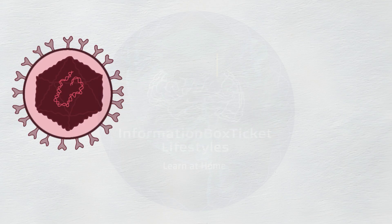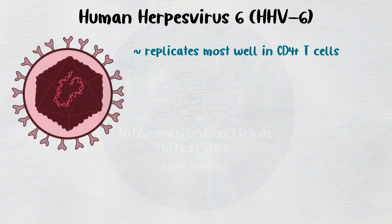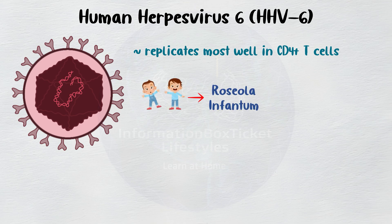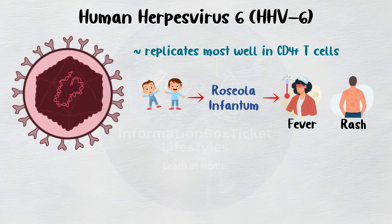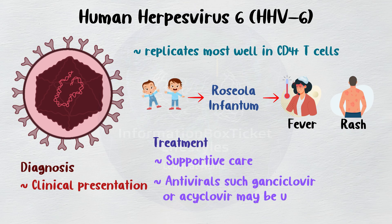In summary, Human Herpesvirus 6 is a double-stranded DNA virus that replicates most effectively in CD4+ T cells. It results in roseola infantum in young infants, marked by a high fever lasting 3 to 5 days followed by a post-fever rash. Diagnosis is typically based on clinical presentation with supportive care as standard treatment, though antivirals such as ganciclovir or acyclovir may be used in severe cases.